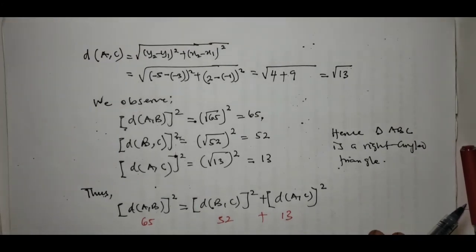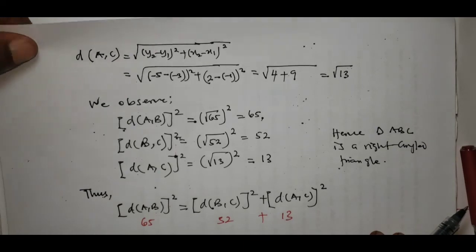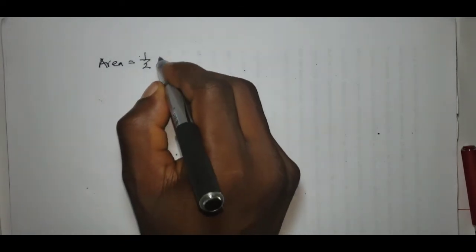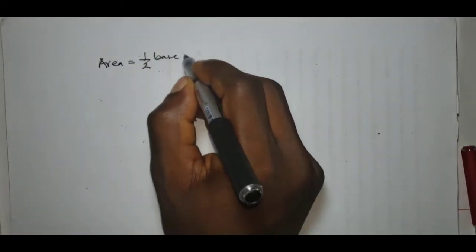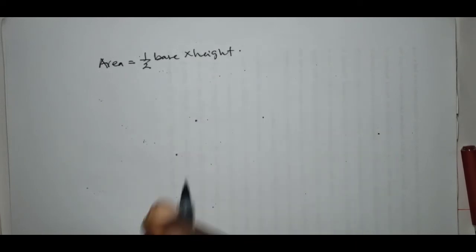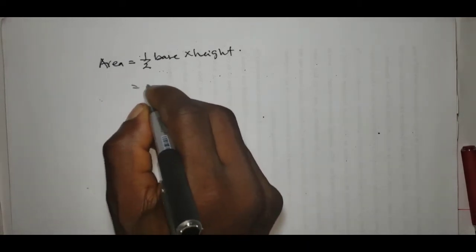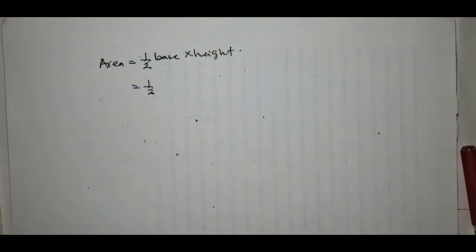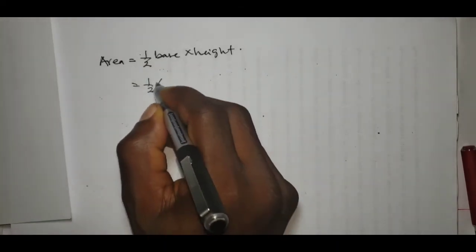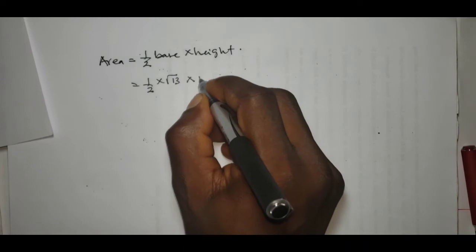The question also says we should find the area of triangle ABC. We know that area equals one-half times base times height. So this gives us one-half times base times height, where the base would be root 13 and the height would be root 52.